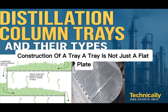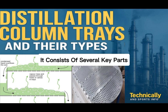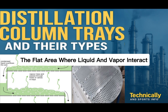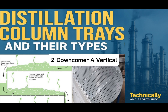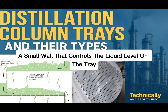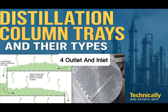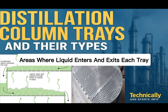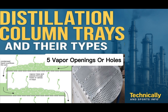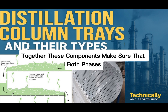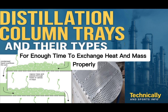A tray is not just a flat plate — it consists of several key parts. First, the tray deck: the flat area where liquid and vapor interact. Second, the downcomer: a vertical channel that carries liquid from one tray to the tray below. Third, the weir: a small wall that controls the liquid level on the tray before it flows into the downcomer. Fourth, outlet and inlet areas where liquid enters and exits each tray. Fifth, vapor openings or holes that allow vapor to pass through the tray deck and bubble into the liquid layer. Together, these components ensure both phases stay in contact long enough to exchange heat and mass properly.